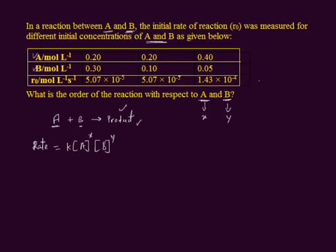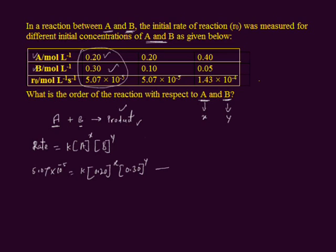The concentrations of reactant A and B are given in the table, along with the respective rate of reaction. There are three different data sets given, so we can plug them into the rate law and find three different equations. Let me take the first data. I encircle the first data here. The rate of reaction for the first data is given as 5.07 × 10⁻⁵, equal to K times 0.20 raised to the power X times 0.30 raised to the power Y.